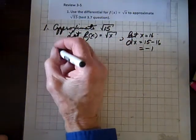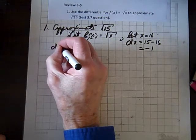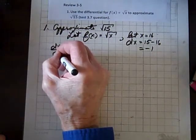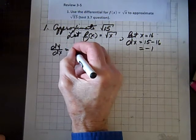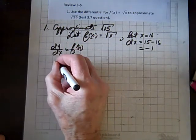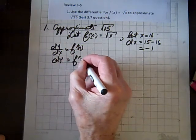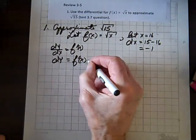Now we know that dy over dx equals f prime of x. So the differential dy equals f prime of x dx.